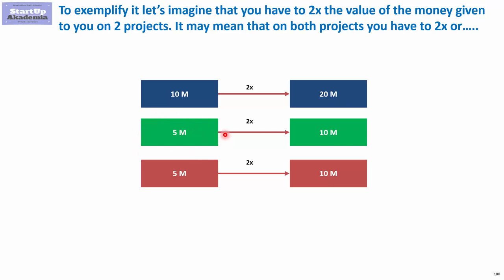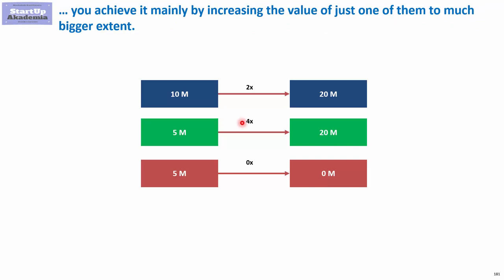Obviously, you would expect to double the amount of money invested in every project, going from 5 million to 10 on every project. However, you can achieve the very same result by simply quadrupling the value of one project, and even if one project goes bankrupt and brings no positive impact, you will still manage to achieve your goal. In portfolio management, you spread the risk across projects.